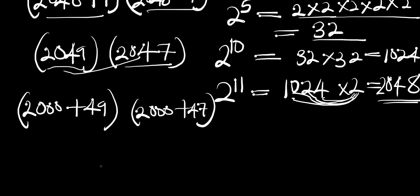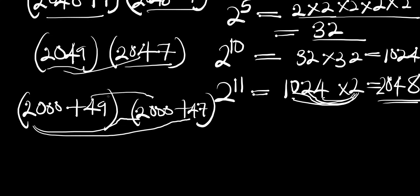Now we have it in the form of (A + B)(A + C). We multiply it out: 2000 times 2000, 2000 times 47, 49 times 2000, and 49 times 47.